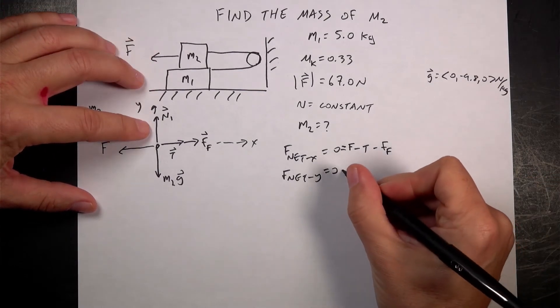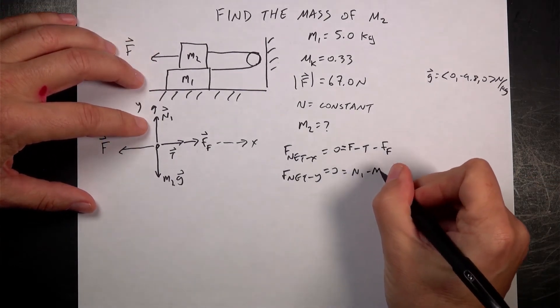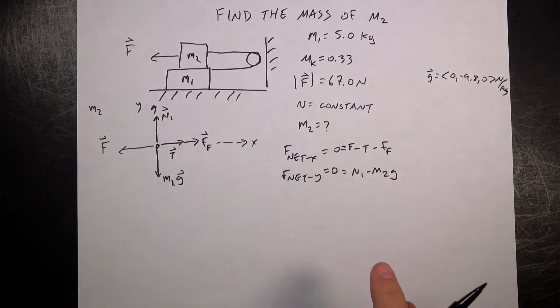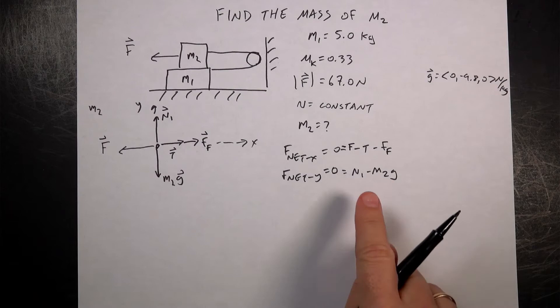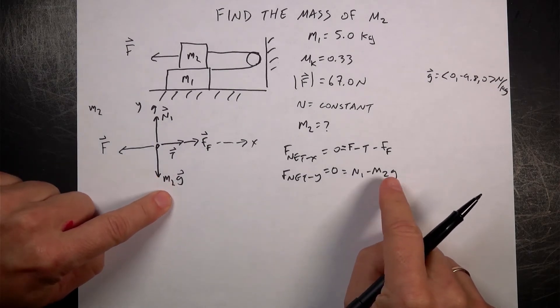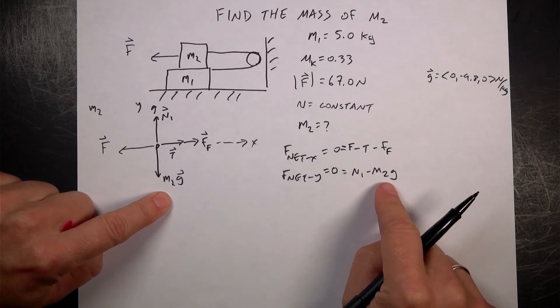And then in the Y direction I have N1 minus M2G. Notice these are scalar equations. Once I start finding the components of the forces, I write them as scalar. So this is a gravitational vector. But when I write this as a Y component, it's in the negative Y direction.